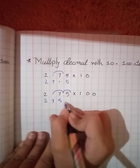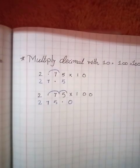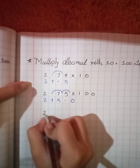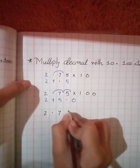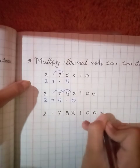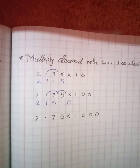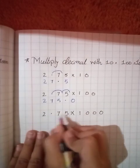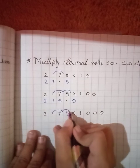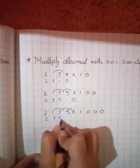Third equation is 2.75 multiplied by 1000. So now the decimal point moves three steps forward - one, two, three. The answer is 2750.